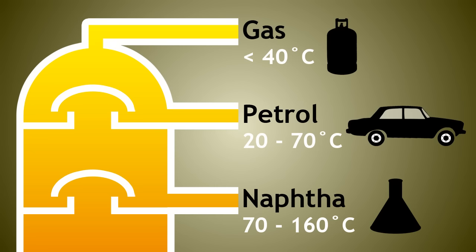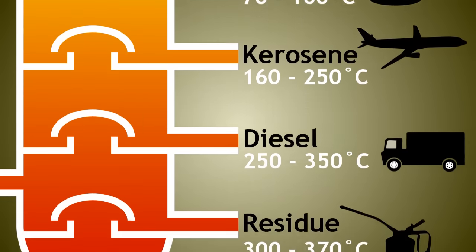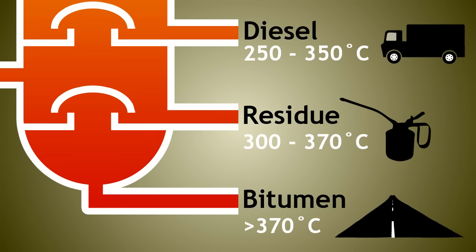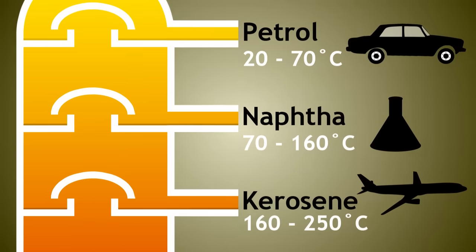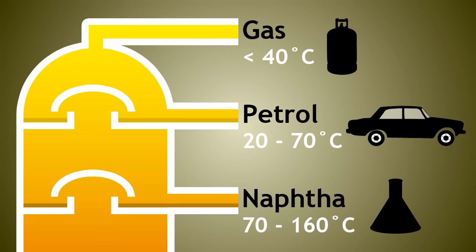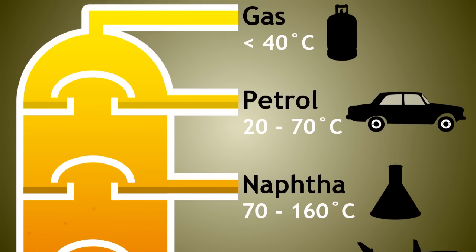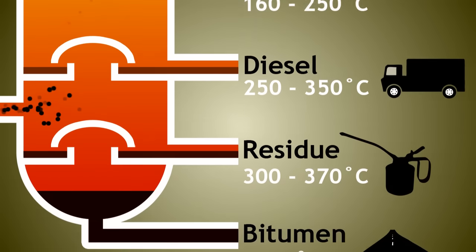As you are now aware, large hydrocarbons have higher boiling points, and so are removed at the bottom of the fractionating column. Smaller molecules condense higher up the column. We will now take a look at some of the common fractions as we move down from the top of the fractionating column.